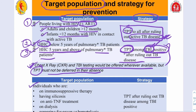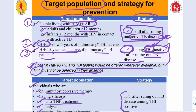Some other target populations are those on immunosuppressive therapy, those with silicosis or on anti-tumor necrosis factor treatment, those on dialysis, and those preparing for organ or hematologic transplantation. All of these fall into the category of immunocompromised patients with reduced immune function. For this group, TPT should be given after ruling out tuberculosis disease among TBI-positive patients — to those who have TB infection but have not yet developed active disease.